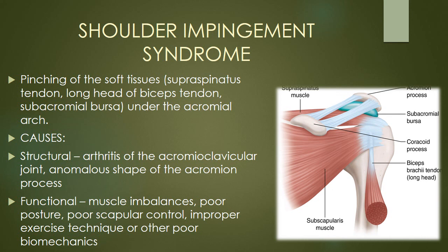What are some of the soft tissues that pass underneath the subacromial arch? As indicated in this diagram, we have the subacromial bursa, the supraspinatus muscle and tendon — note the musculotendinous junction, which sits exactly underneath the acromion process — and the long head of the biceps tendon, which in various positions of humerus elevation comes directly underneath the subacromial arch. Any one or combination of these soft tissues can become compressed, inflamed, and painful in shoulder impingement syndrome.